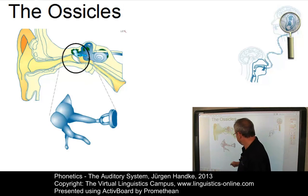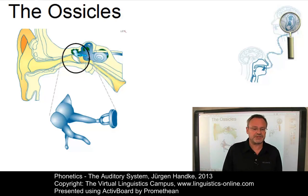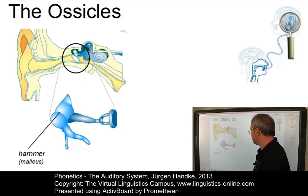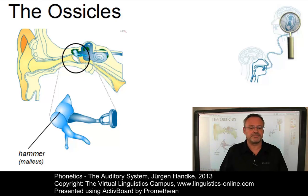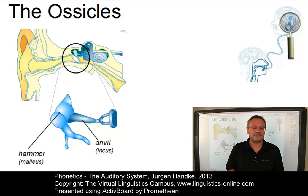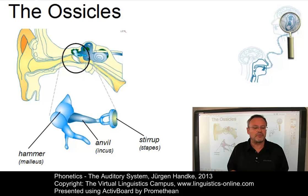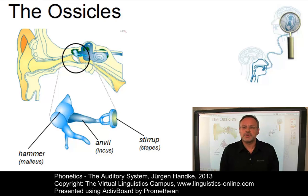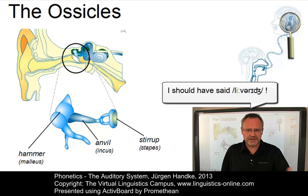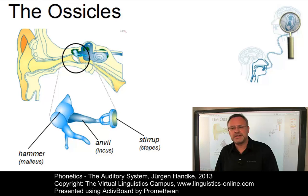The ossicles, here in an enlarged form, are a system of three small bones which are named after their shape. The hammer, or malleus, is attached to the eardrum. The anvil is the link between the hammer and the stirrup, the final little bone. The stirrup fits into the oval window of the inner ear and transmits the mechanical vibrations to it. Together, the ossicles function as a kind of leverage system, amplifying the vibrations by a factor of over 30 decibels by the time they reach the inner ear via the membrane-covered oval opening of the inner ear.